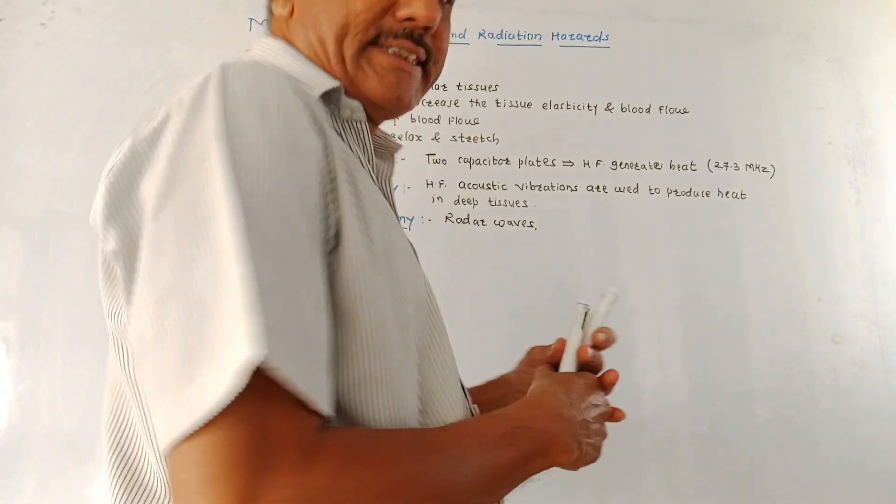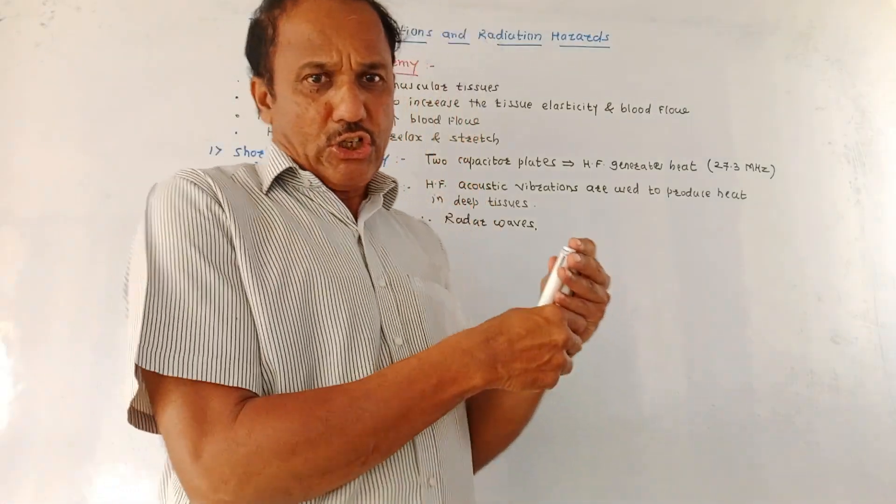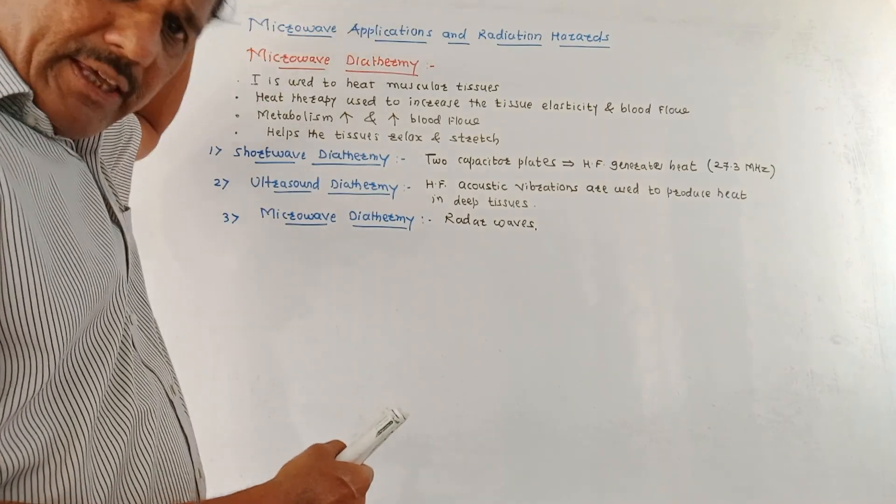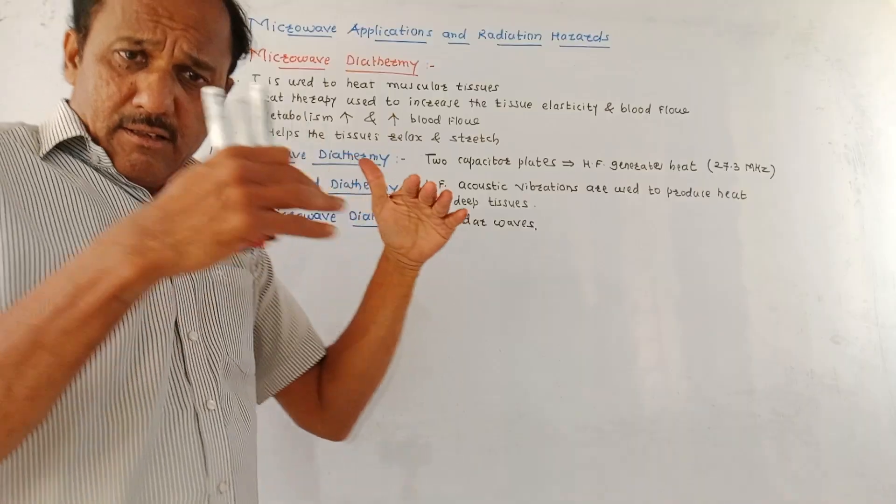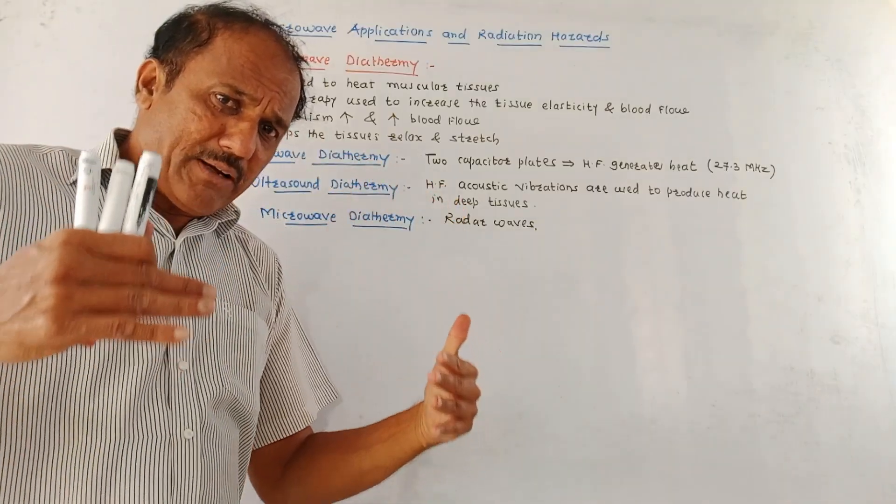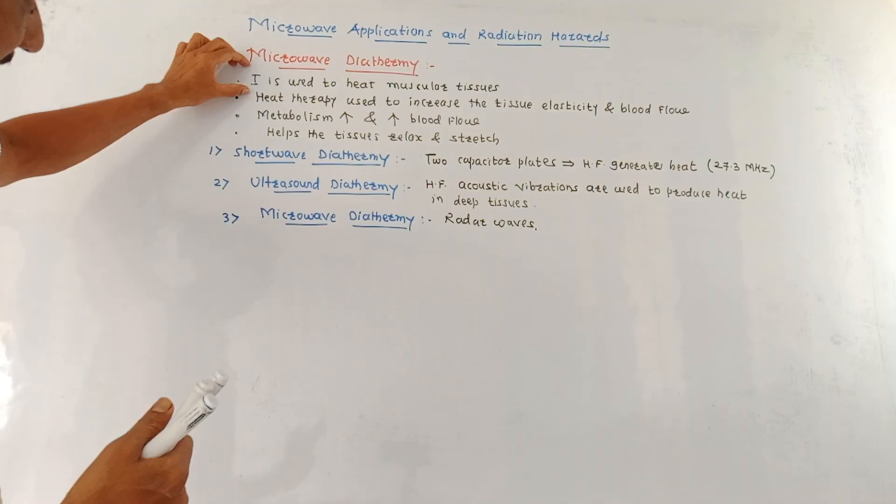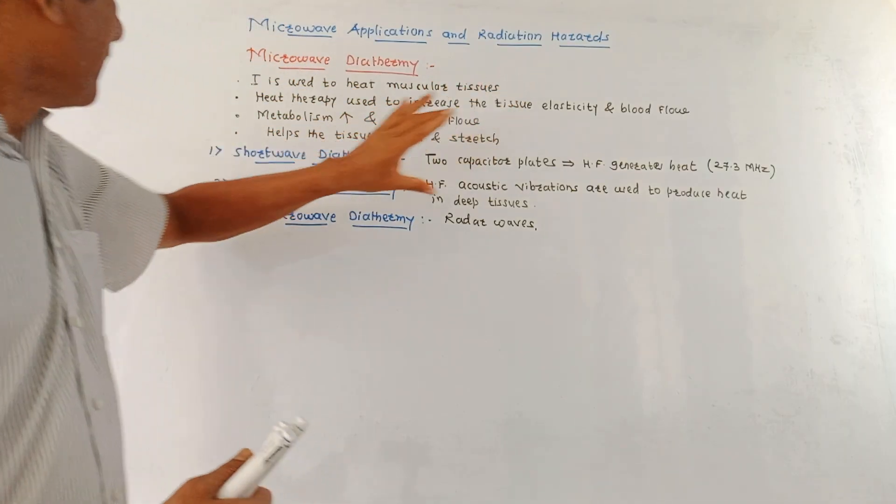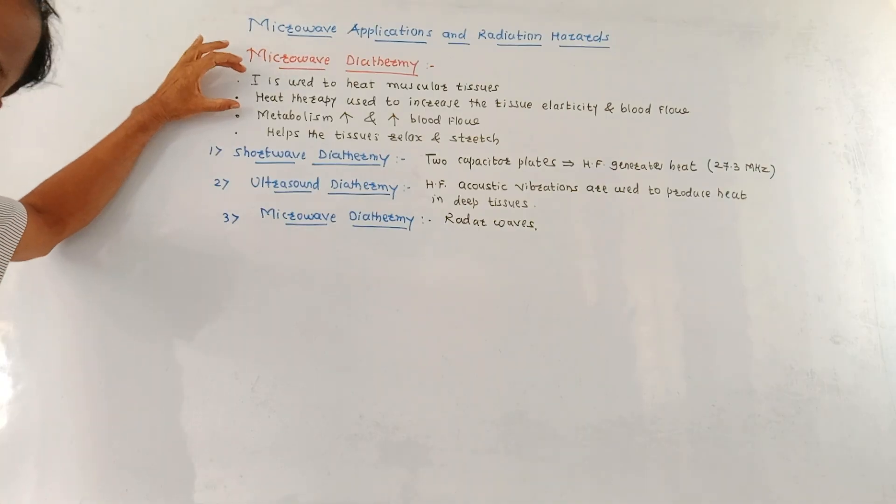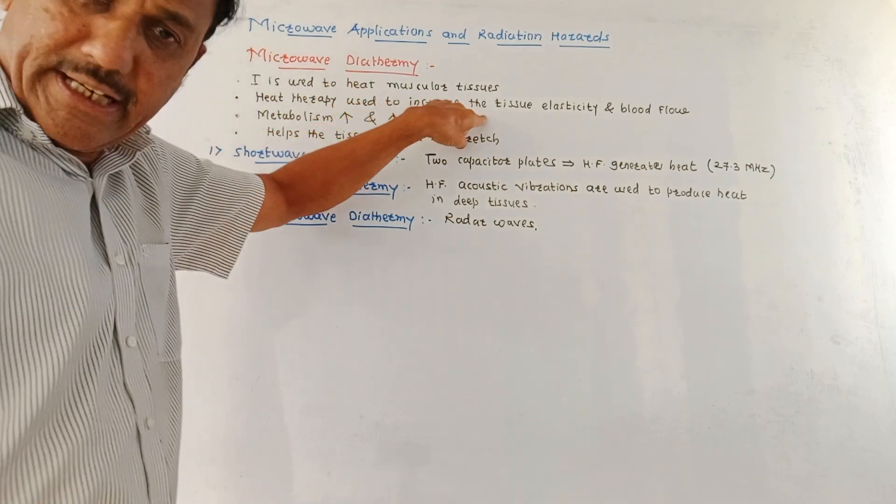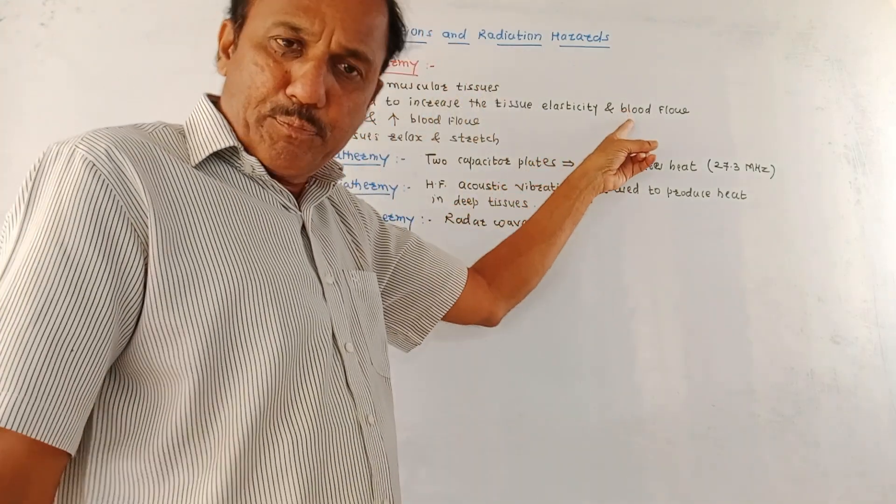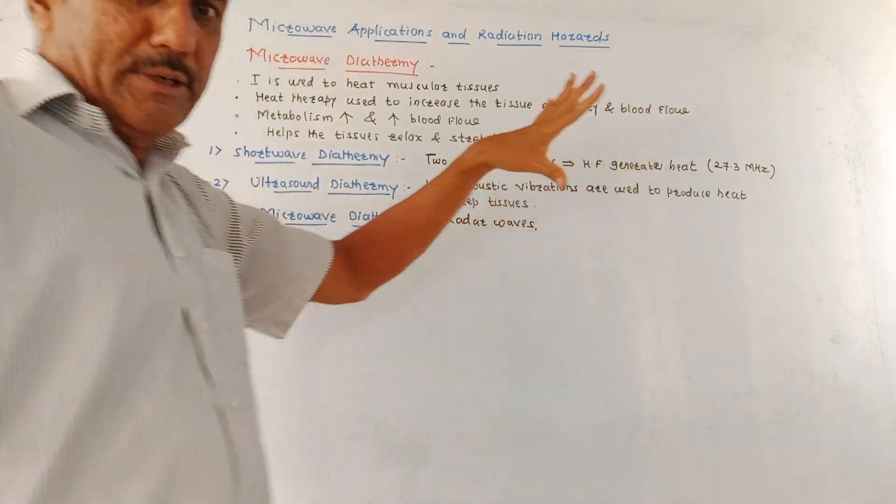Now let us discuss one important biomedical application of microwave: Microwave Diathermy. In this case, basically the treatment is given by increasing the heat. In this method, current is used to heat the muscular tissues. This is basically heat therapy, heat treatment, and this heat therapy is used to increase the tissue elasticity as well as improve the blood flow in that particular muscular tissue.